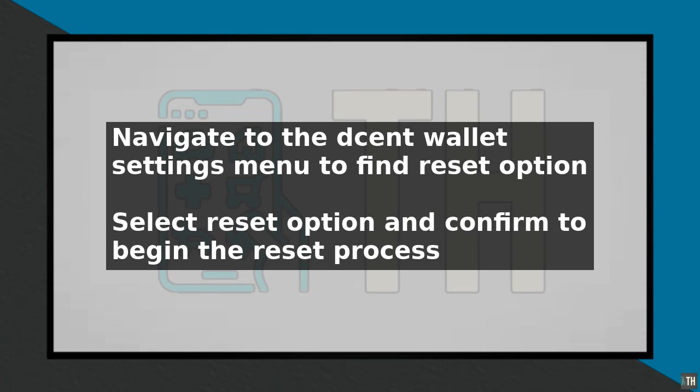Next, go to the Decent wallet device and navigate to the settings menu. In the settings menu, look for the reset or factory reset option. Select this option to begin the reset process. You may be prompted to confirm that you want to reset the wallet, as this action will erase all data on the device.